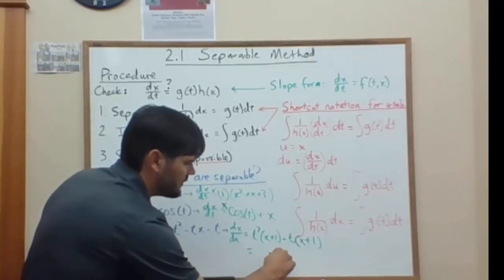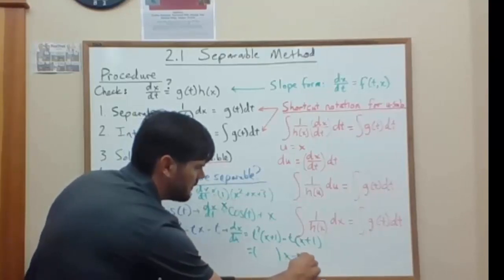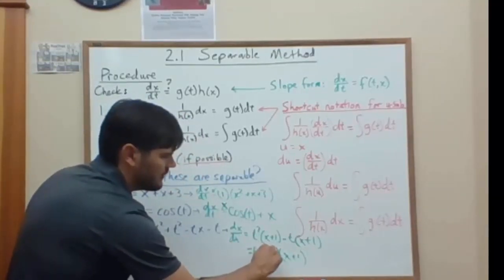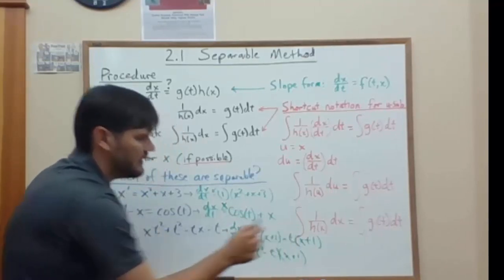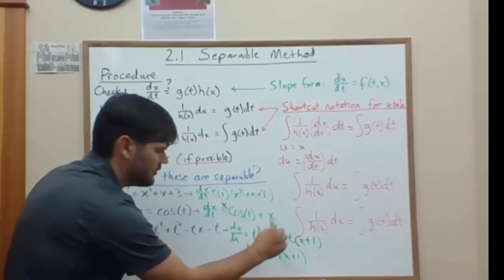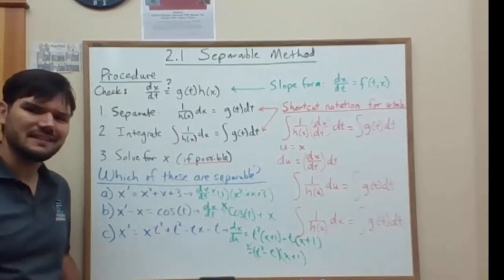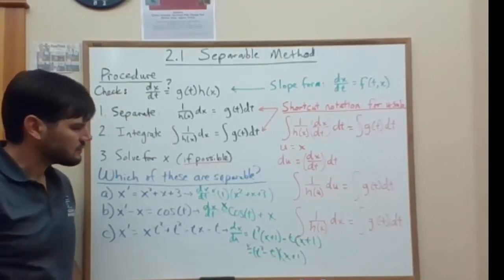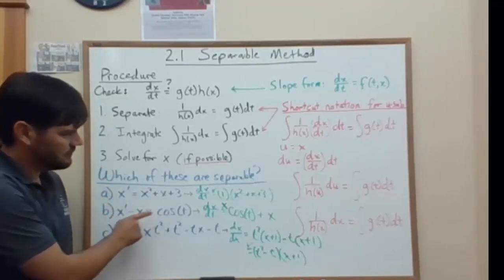yes, because they both have a common term of x plus one. So we factor that common x plus one out, and we're left with t squared here and a minus t there. Check. That one is separable. So don't give up too soon.